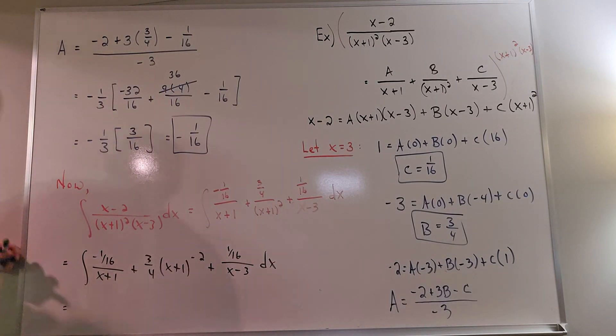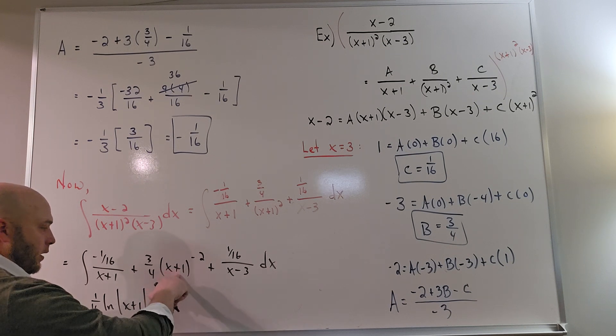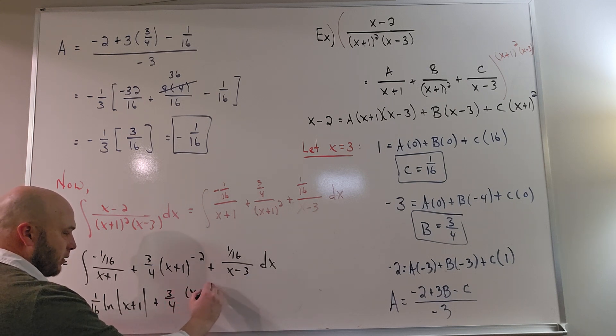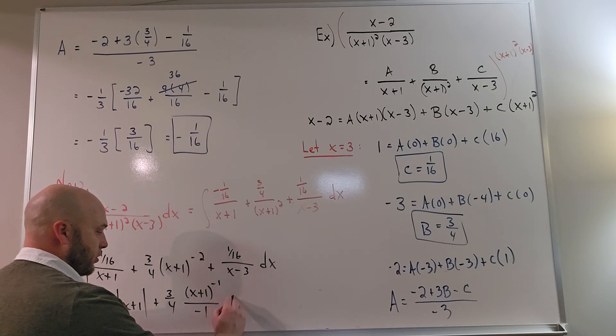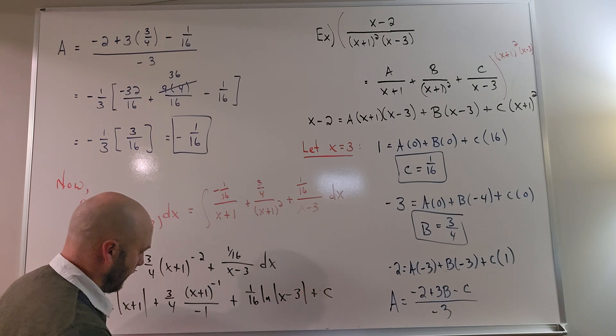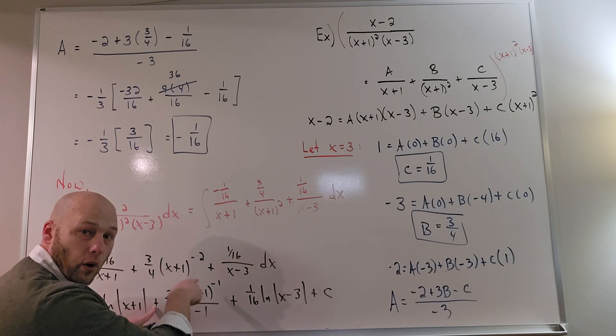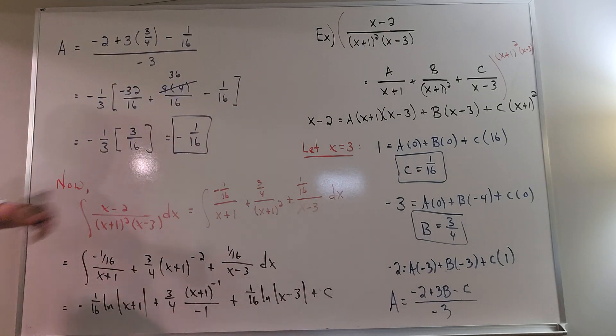So now for the final answer. This one would be a natural log, I get negative 1 over 16 natural log x plus 1, plus 3/4. Since this exponent is not negative 1, we use the power rule on it, meaning I add 1 to the exponent, divide by the increased exponent. So the power rule for anti-derivatives, last term plus 1/16 natural log x minus 3, and then plus c. You can then, of course, clean this up and write this negative here, and then I can flip this to the bottom, make that 1 over x plus 1. So you can go ahead and simplify that. But there would be your answer for the integral.